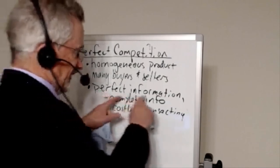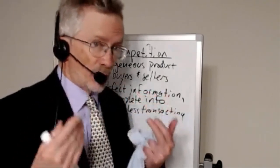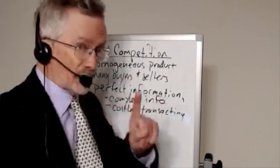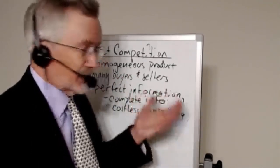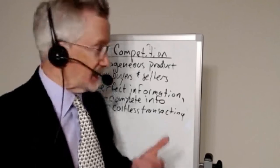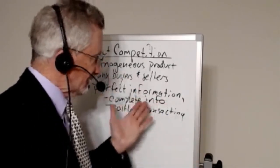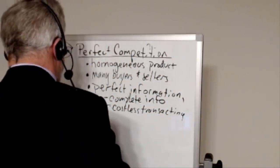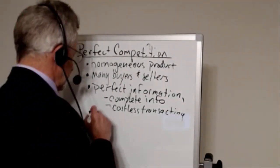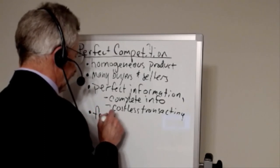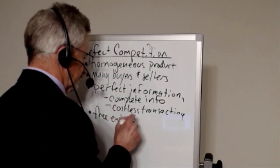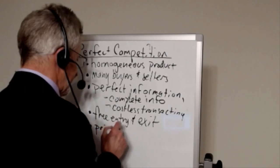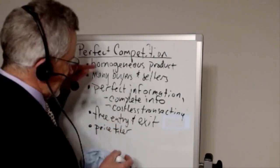Sometimes under this heading we will also put zero transaction cost or costless transacting. By perfect information, the buyers and sellers know what all the buying and selling opportunities are. So if there were many buyers and many sellers, but the buyers only knew about one of the sellers, he could act as if it's a monopoly situation until the buyers figure out there are other places where they can buy.